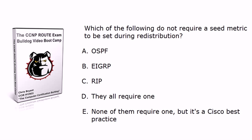Now for the next question: OSPF does not require a seed metric — its default seed metric is 20 — but both EIGRP and RIP are going to need one. There are two different ways to do that which you need to be familiar with: one being the default-metric command, and the other is specifying the metric at the end of the redistribute command itself. So the one that didn't require a seed metric is A — OSPF.